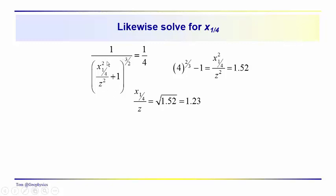Solve more precisely rather than graphically for the x one quarter over z, we find that that's equal to 1.23, which is pretty close to our graphical estimate. And this gives us a z equal to 0.81 times x one quarter.